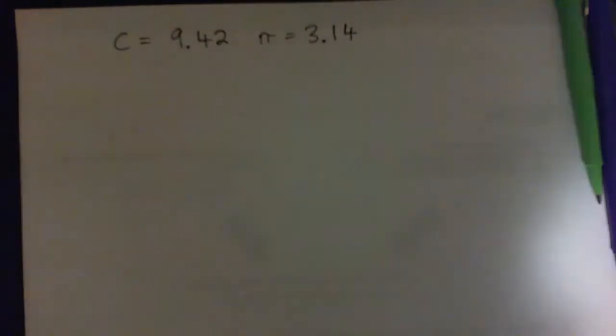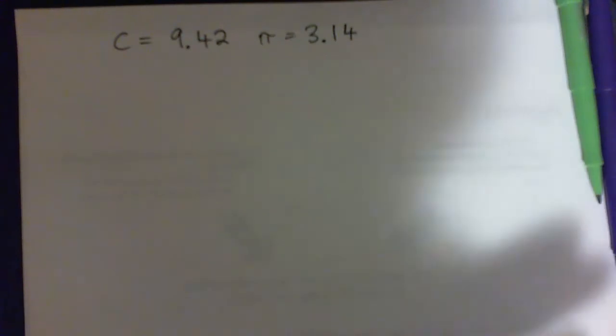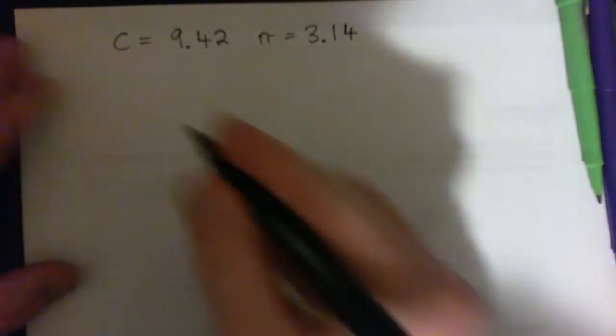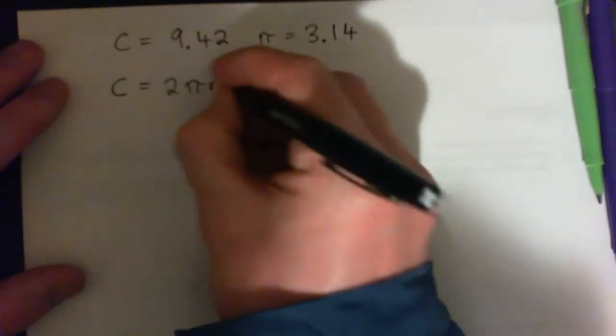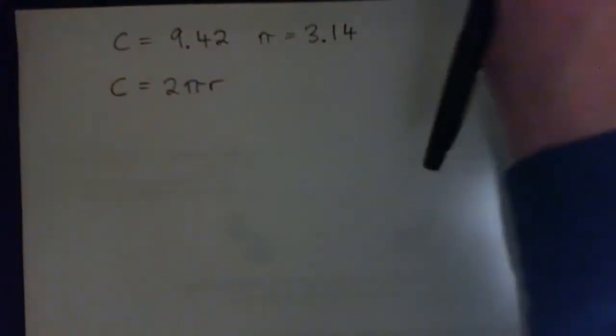And again, if you just follow along with the video, you don't have to do it twice. The video notes is the text. So our formula is circumference equals 2πr, right? We went over that in the previous video.